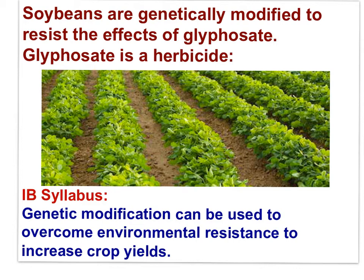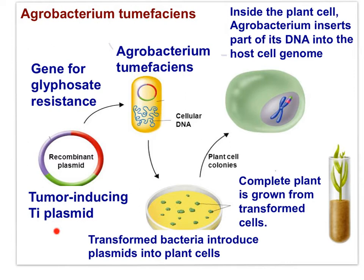Soybeans have been genetically modified with Agrobacterium tumefaciens to resist exposure to the herbicide glyphosate. Farmers can spray glyphosate to kill weeds competing with their crops without risk of killing the crops themselves. The Ti plasmid has the gene for glyphosate resistance inserted on it, along with genes for producing a tumor on the infected plant and genes that allow the plasmid DNA to be inserted into the plant genome.